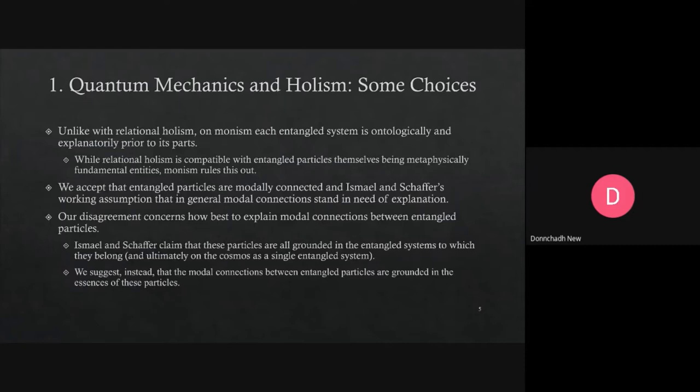According to this version of monism the entangled system is ontologically and explanatorily prior to its parts. We're going to accept that it's generally a good idea to try to explain modal connections, and we're not saying the explanation they propose can't work, but what we want to do is explore an alternative way of explaining. The thought here is that the modal connection is ultimately sourced in the essences of the entangled particles, rather than in the entire system taken to be prior to the particles.